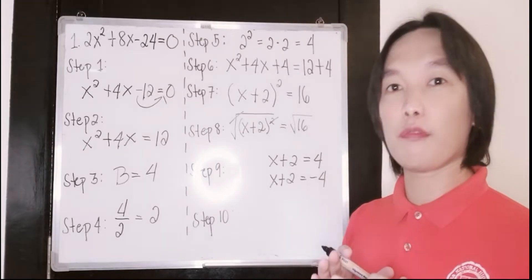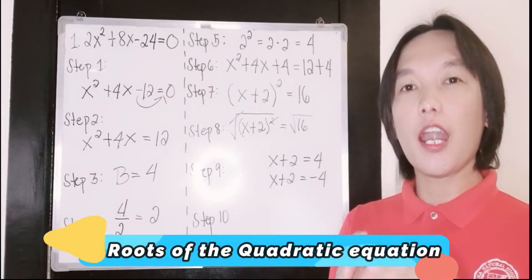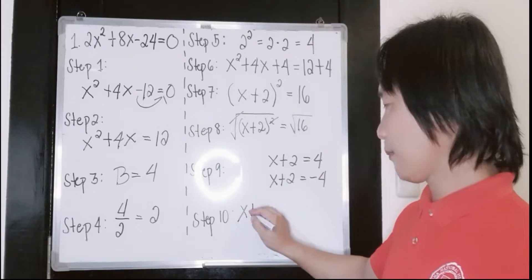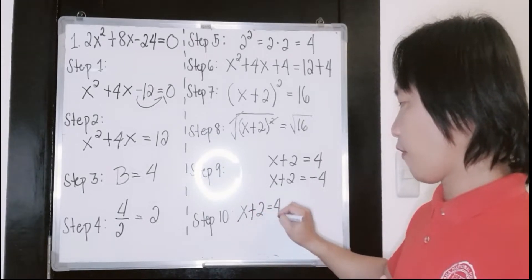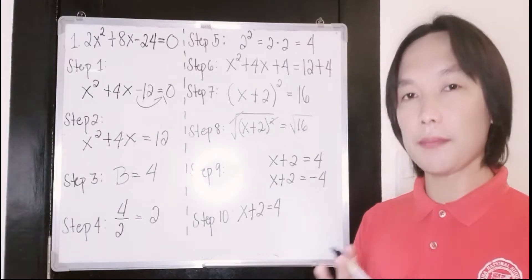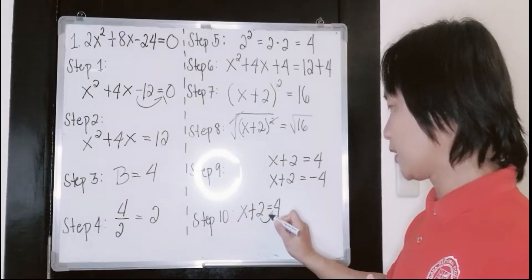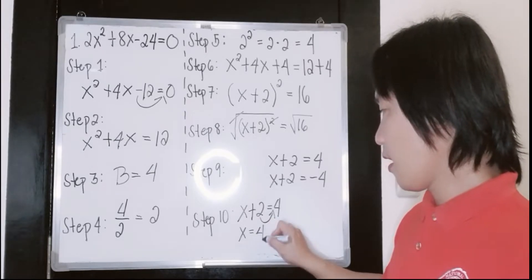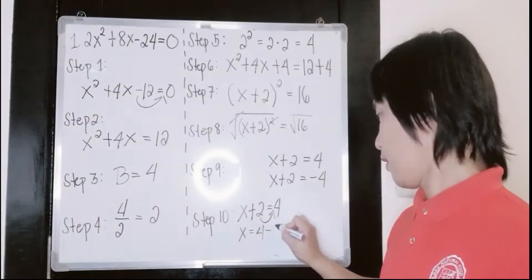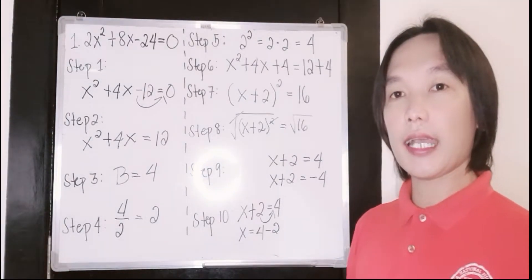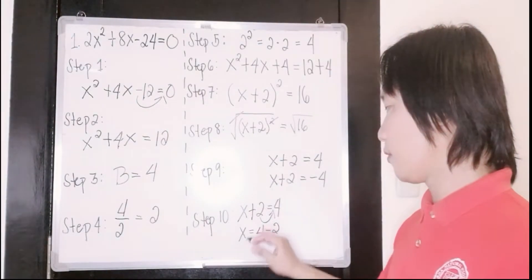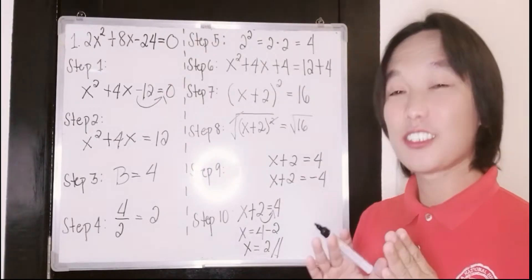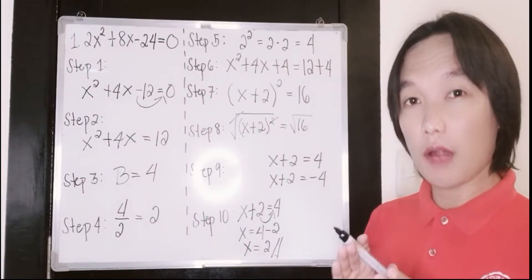Our last step is to find the value of our letter x. We have x plus 2 equals 4. We group all similar terms, so our 2 will be transferred to the left side. That will be x equal to 4, and since it is positive, when you transfer it, it will become negative 2, or simply 4 minus 2. Our x is equal to positive 2. So that is our first value for our letter x.